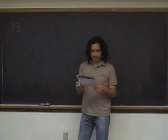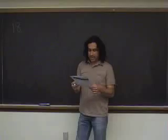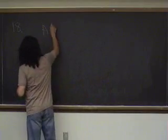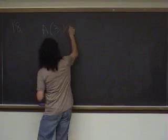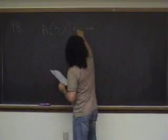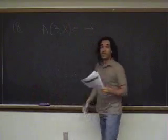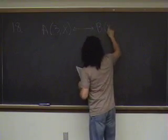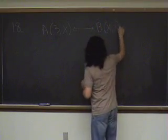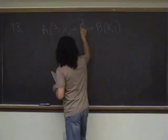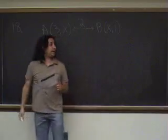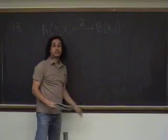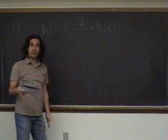Question number 18. If the distance between point A, located at (3, x), and point B, located at (x, y), if this distance between these two points is 2, then what's x?